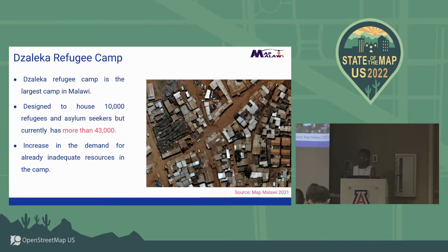Given the increasing demand on already inadequate resources, we thought we should map this out — what does it look like on the map? With the increasing number of refugees around the world, we thought this is something that we need to address.